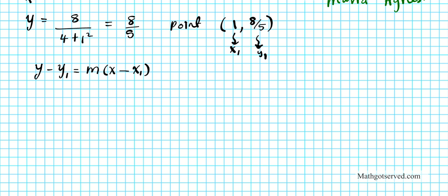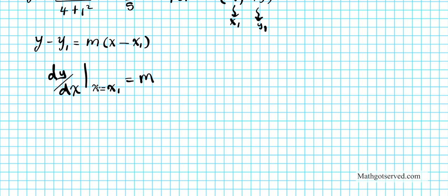Evaluating the derivative of our function at x equals x1 gives us the slope m. The definition of the derivative is the slope of the tangent line at that point. So we find the derivative, plug in x1 equals 1, and that gives us our slope. We know x1 and y1 — we just need m.